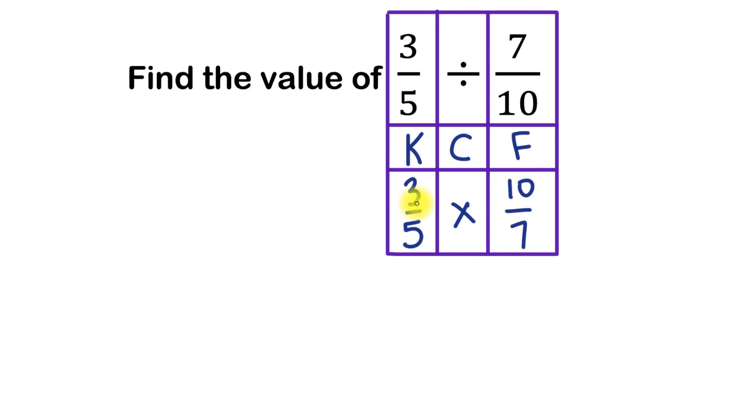So now we have 3 over 5 times 10 over 7. And since it's a multiplication of fractions problem, it's not too bad. We can just multiply the tops and then multiply the bottoms, and then we're basically done. So we've got 3 times 10 is equal to 30, and 5 times 7 is equal to 35.